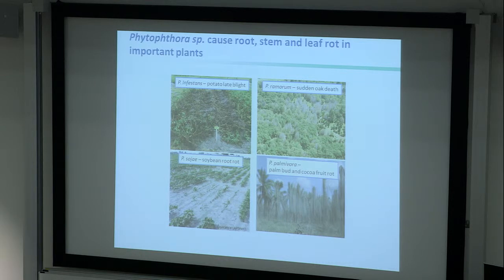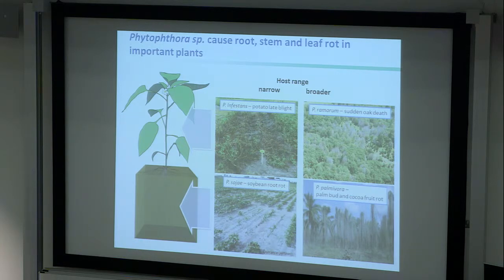Oomycetes look like fungi but are not fungi at all — they are rather related to brown algae and have cellulosic cell walls, whereas fungi have chitinous cell walls. They infect all sorts of plants: Phytophthora infestans causes late blight, Phytophthora ramorum causes sudden oak death, Phytophthora sojae kills soybeans, and Phytophthora palmivora kills palms. Some species prefer above-ground tissues, but most Phytophthora are soil-borne pathogens that enter through roots and then cause secondary infections in flower buds and stems.